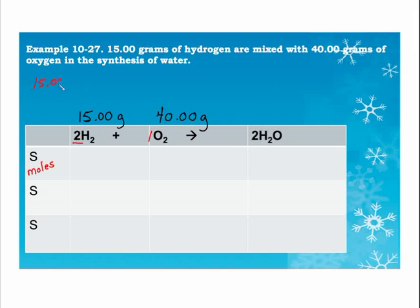So I'm going to start with 15.00 grams of hydrogen and I want moles of hydrogen. Mass to moles, use molar mass. Don't forget it's diatomic. So if I solve for my moles of hydrogen, I got 7.426 moles.